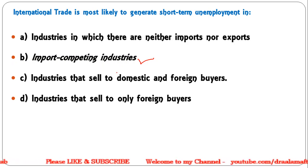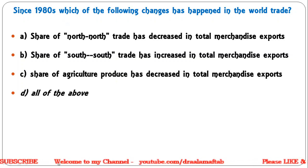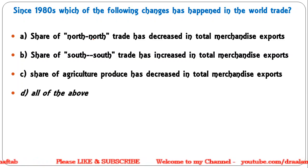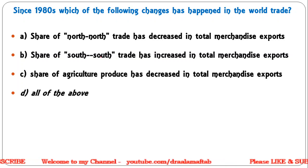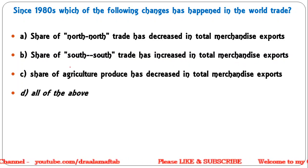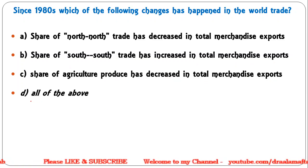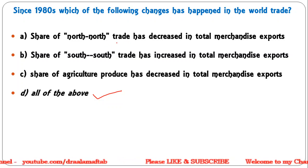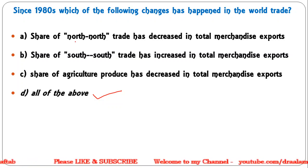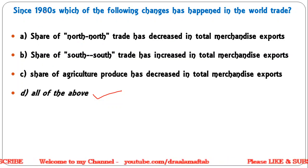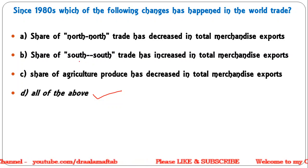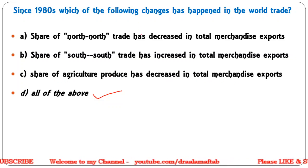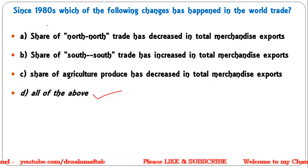Next question: Since the 1980s, which of the following changes has happened in world trade? Share of north-north trade has decreased in total merchandise exports; share of south-south trade has increased in total merchandise exports; share of agriculture produce has decreased in total merchandise exports; all of the above. Correct answer is all of the above. North-north trade means trade among developed countries. South-south trade has increased, as south refers to developing countries, and the share of agriculture produce has decreased.